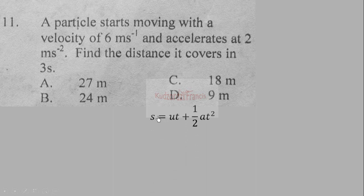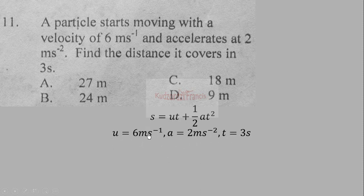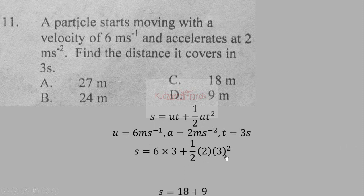We use the equation s = ut + ½at². We know the initial velocity is 6 meters per second, the acceleration is 2 meters per second squared, and the time is 3 seconds. Substituting into the formula, we get s = 6×3 + ½×2×3².